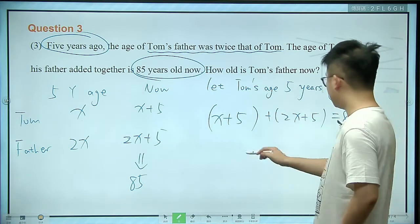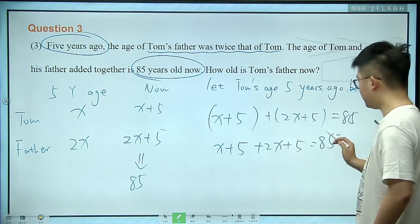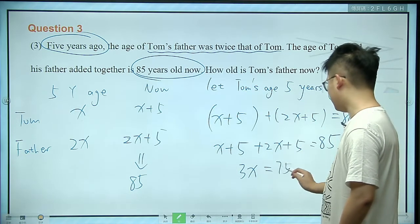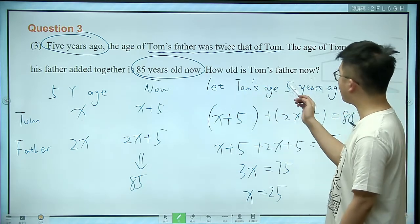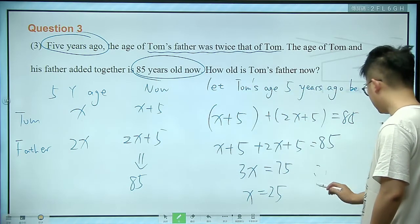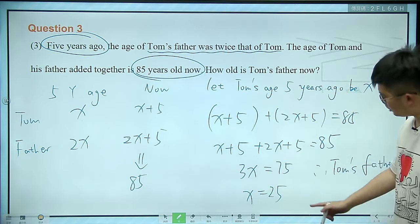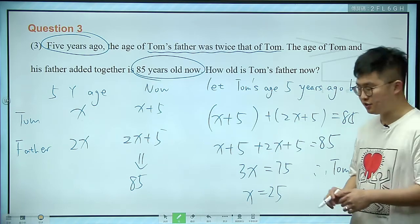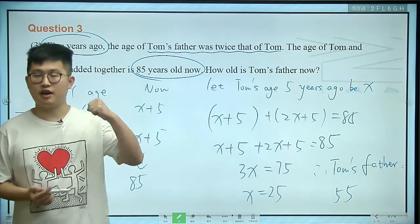Let's do the calculation. Putting the x terms together: 3x equals 75, so x is 25. But pay attention — the question asks about Tom's father's age now, which is 2x plus 5. With x equals 25, that gives 55 years old. So this is the correct answer. That's the end of today's practice. I hope you do well. Goodbye.